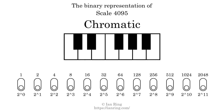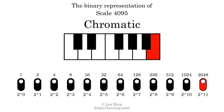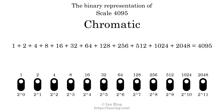The binary representation of this scale is determined by mapping tones of the scale to binary digits. Each binary digit represents a power of 2. To get the scale number, we add the powers of 2 together. The powers of 2 that are present in the scale, all added together, equals 4095. That is why the scale number, in decimal, is 4095.